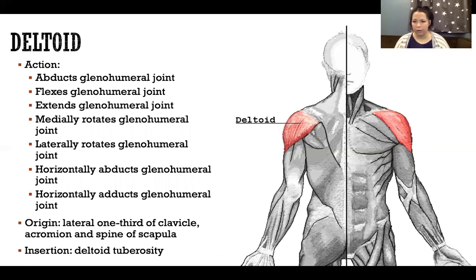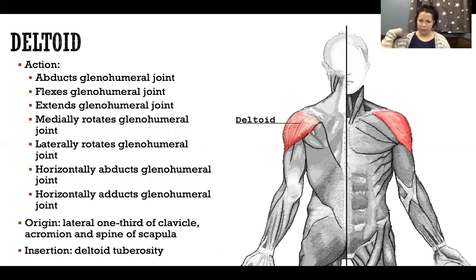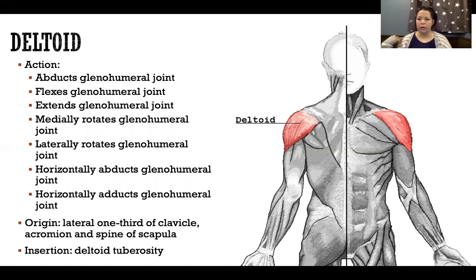With deltoid, the insertion is the deltoid tuberosity in the middle of the humerus. The origin is very broad — from the lateral third of the clavicle all the way to the acromion and then the spine of the scapula. It has a very broad origin with fibers starting all along that V on top of the shoulder, tapering into one point. The middle fibers just abduct, but the anterior and posterior fibers have completely opposite actions.